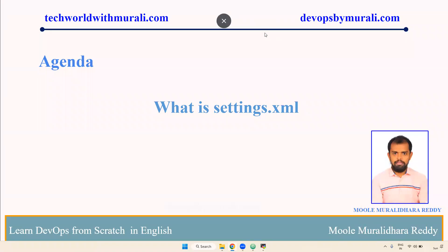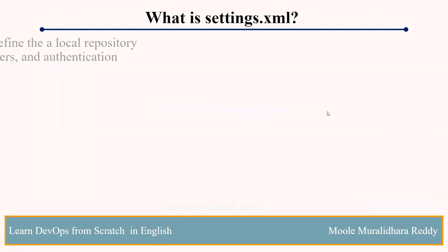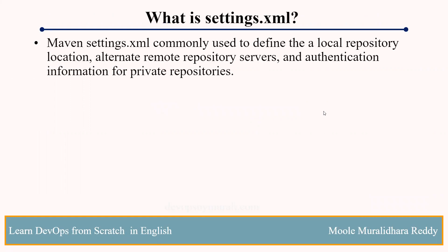Good morning everyone. Myself, Mughalithar. In this video, we are going to discuss about what is settings.xml. Settings.xml is used to define the local repository location, and also we can define remote repository servers and authentication details. For example, JFrog or Nexus authentication details we can declare inside the settings.xml to connect private repositories.